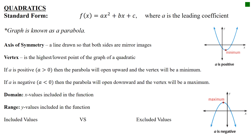A couple of vocabulary terms to know. The axis of symmetry is a line drawn so that both sides are mirror images — drawn halfway so the left side looks exactly like the right side. The vertex is the highest or lowest point of the graph. If the parabola opens upwards, the vertex is a minimum — the smallest y-value the graph reaches. If it opens downwards, the vertex is a maximum — the highest y-value the graph touches.